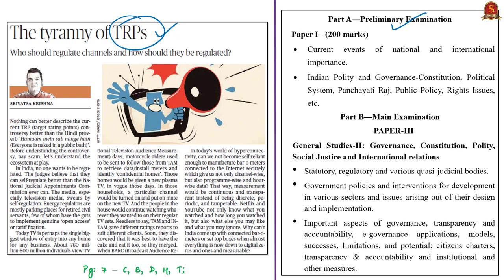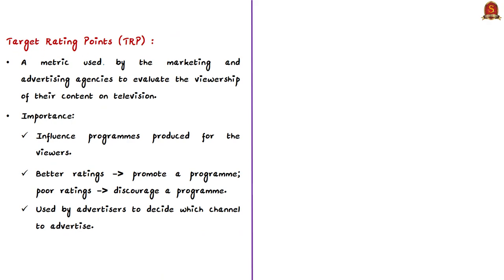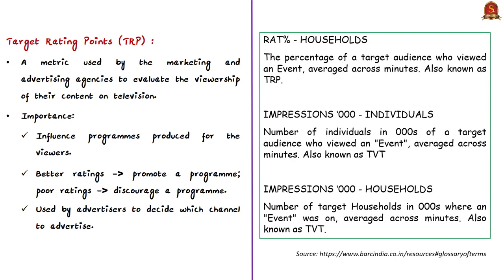TRP refers to the percentage of a target audience who viewed a particular event on television, averaged across minutes. It is also called the rating percentage. This metric is used by marketing and advertising agencies to evaluate the viewership of their content on television, helping them decide on which channel to place a particular advertisement for better reach and visibility. Some reports use the term 'television rating point,' but BARK defines it as the percentage of target audience who viewed a particular event in TV averaged across minutes.